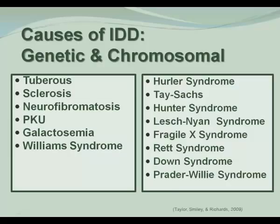Tay-Sachs disease is a progressive nervous system disorder that causes profound IDD, deafness, blindness, paralysis, and seizures. Caused by a recessive gene, this disorder is found in specific Jewish clans and Irish clans, and it is usually fatal by the age of 5.